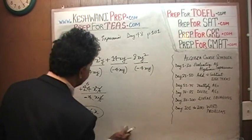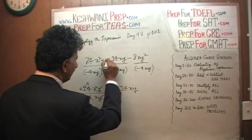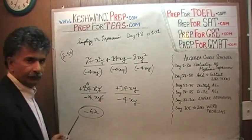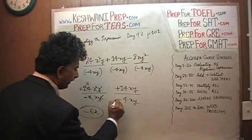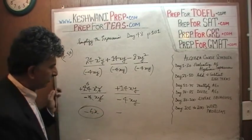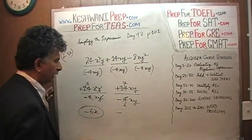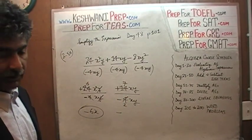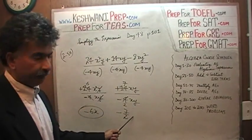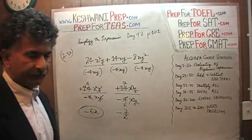The second term: 14xy divided by negative 4xy. Positive divided by negative gives us negative. 14 divided by 4 — divide top and bottom by 2 — gives us 7 over 2. And x cancels out this x, and y cancels out that y. So the second term is negative 7 over 2.